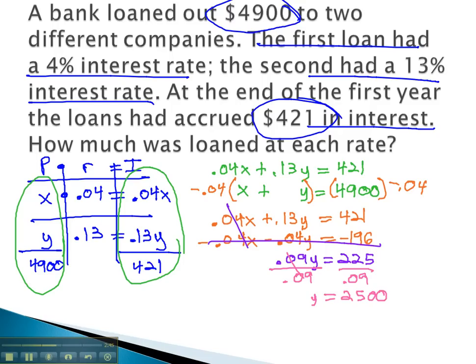We still need to find x, and we could find that going back to an original equation. The bottom one would probably be the easiest. x plus y, or x plus 2500 equals 4900. Subtracting 2500 from both sides tells us that x is equal to 2400.